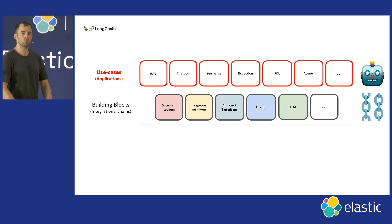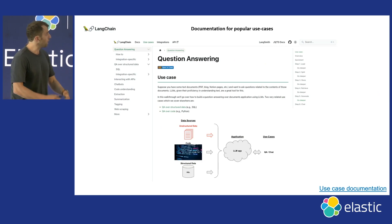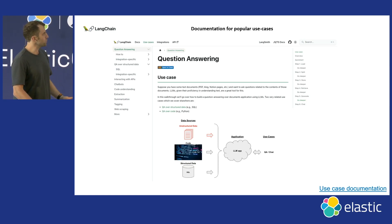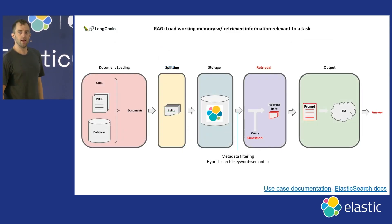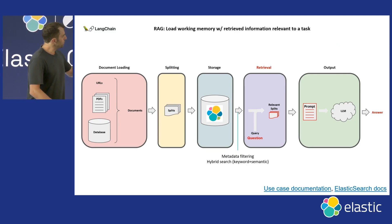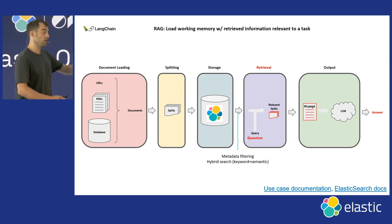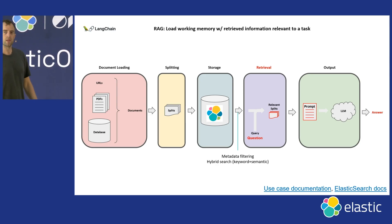We have documentation on all of our use cases at langchain.com, with Colab notebooks you can use to explore different use cases like summarization, agents, and RAG. For RAG specifically, the pipeline involves document loading, splitting, storage — which can be Elastic — a retrieval step, and then an LLM to summarize the result.